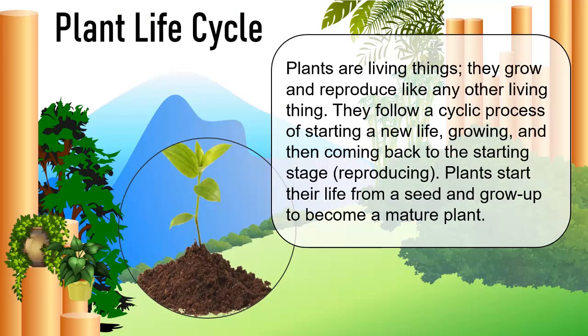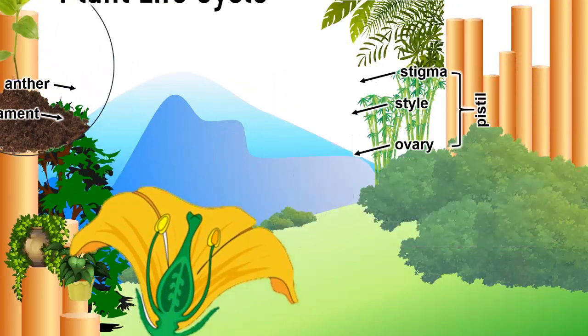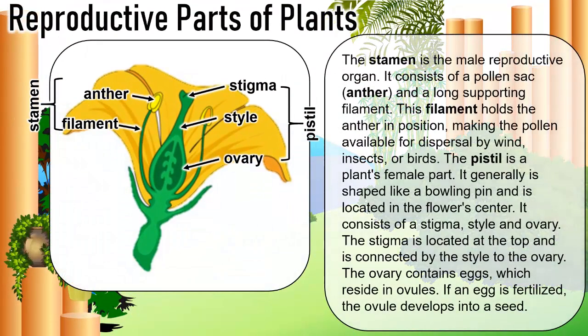Plants are living things. They grow and reproduce like any other living thing. They follow a cyclic process of starting a new life, growing, and then coming back to the starting stage — reproducing. Plants start their life from a seed and grow up to become a mature plant. Before we proceed with the plant life cycle, let's have a background of the reproductive organs of plants.